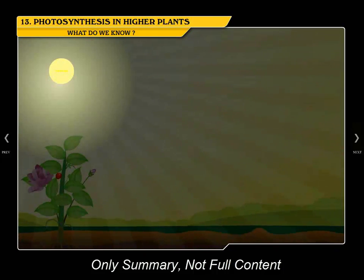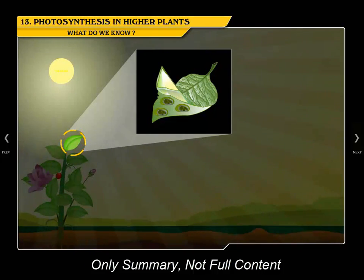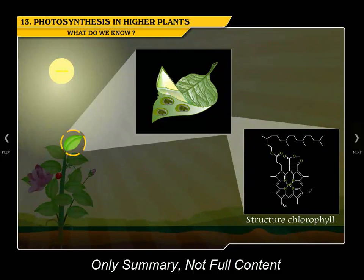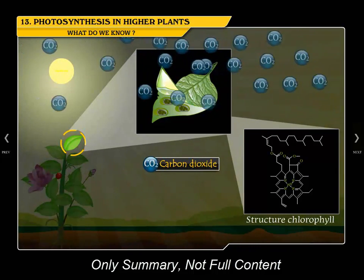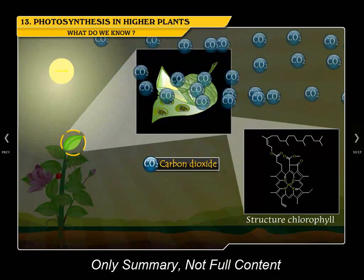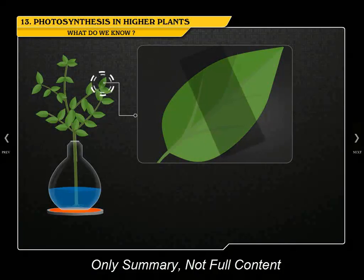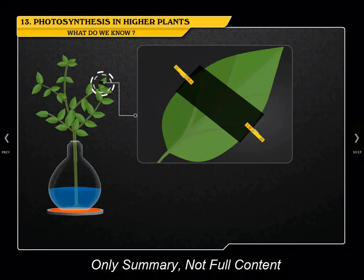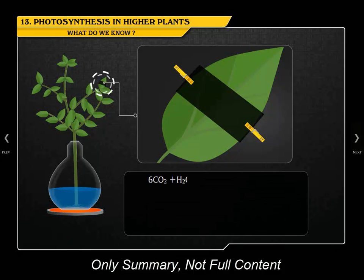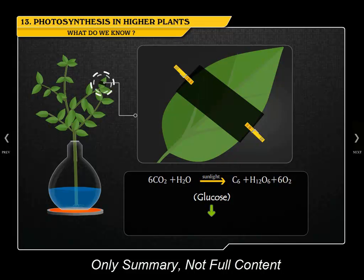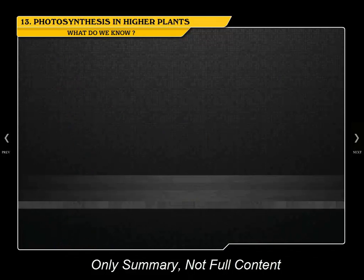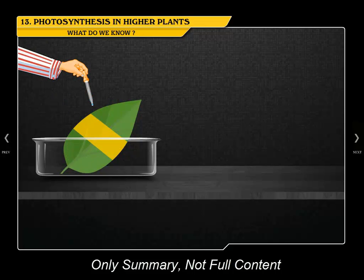We all know that chlorophyll plays an important role in photosynthesis, which takes place in the presence of light and carbon dioxide. Let us perform an experiment to support this fact. Take two leaves and partially cover one with black paper, leaving the other completely exposed to light. Photosynthesis takes place and results in the preparation of starch only in the area exposed to light, which can be confirmed by testing the leaves for starch.